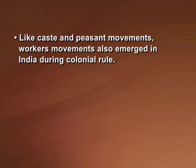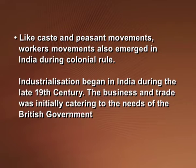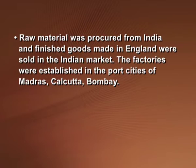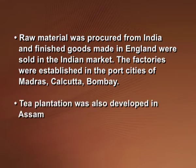Like caste and peasant movements, worker movements also emerged in India during colonial rule. Industrialization began in India during the late 19th century. Business and trade initially catered to British needs — raw material was procured from India and finished goods were made in England, then sold back in the Indian market. Factories were established in port cities of Madras, Calcutta, and Bombay; tea plantations were also developed in Assam.